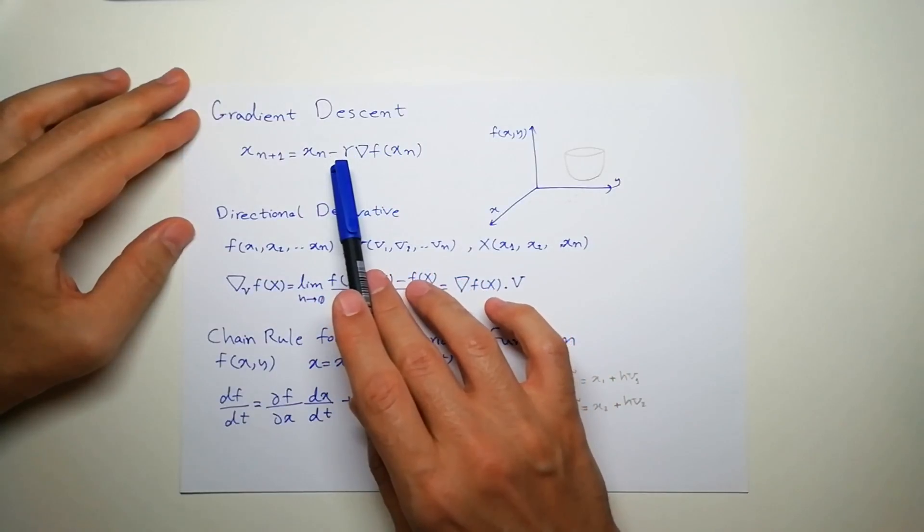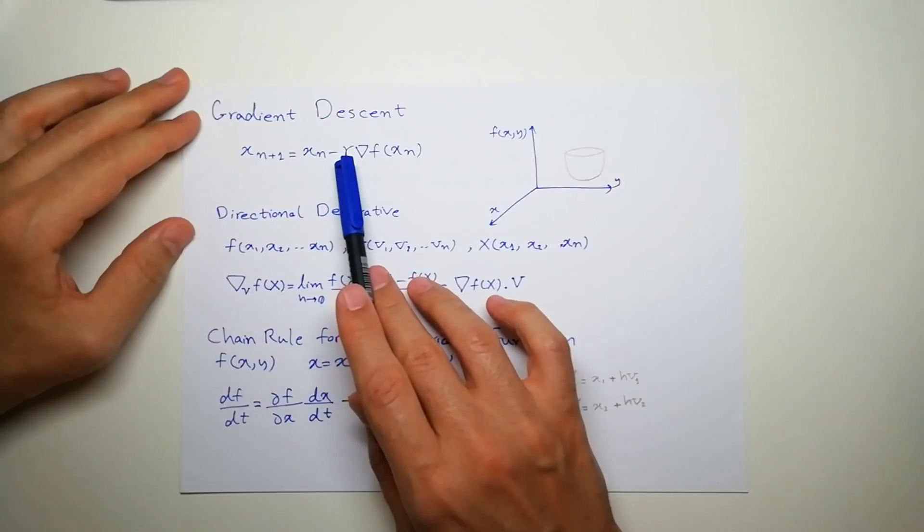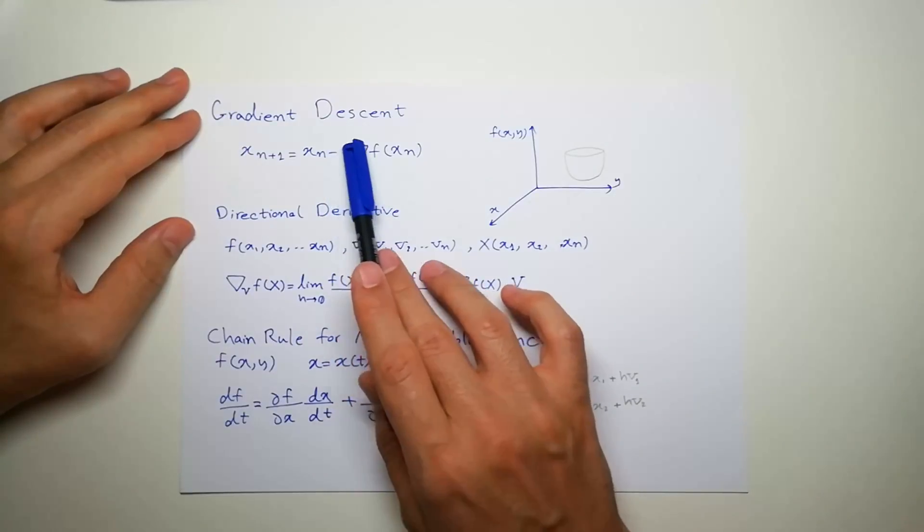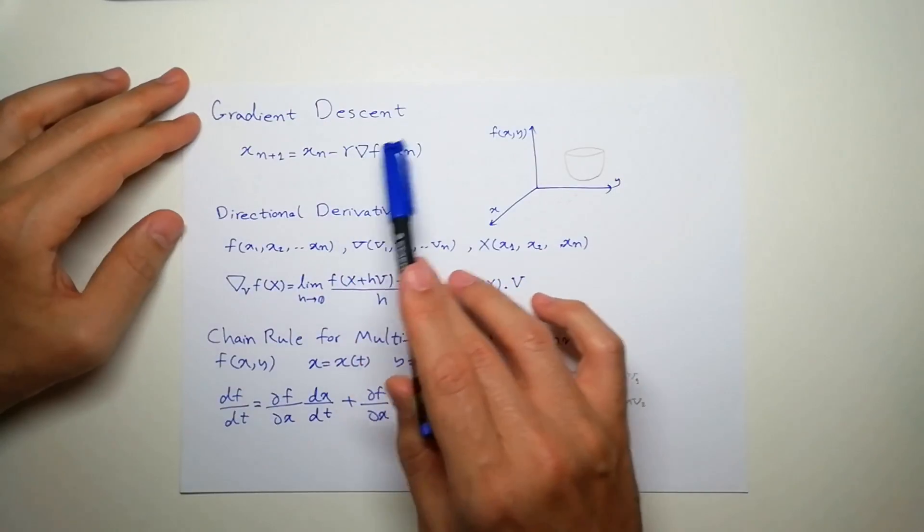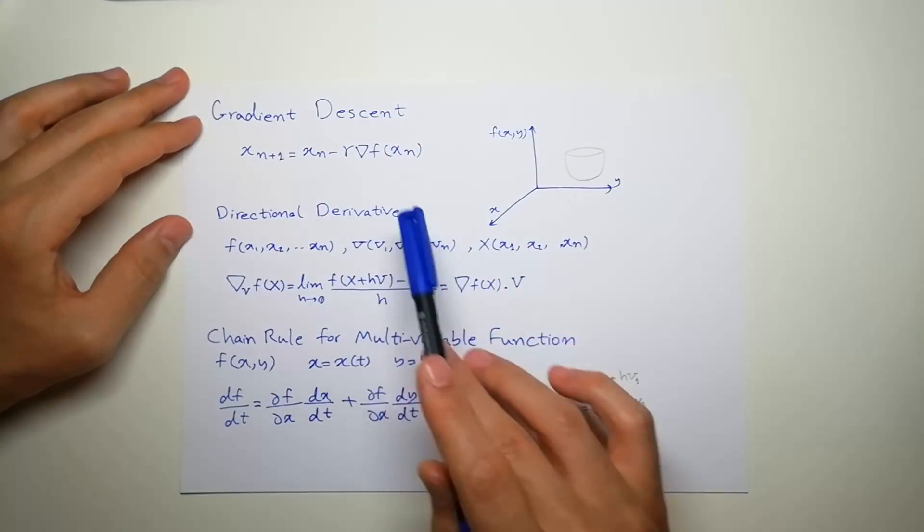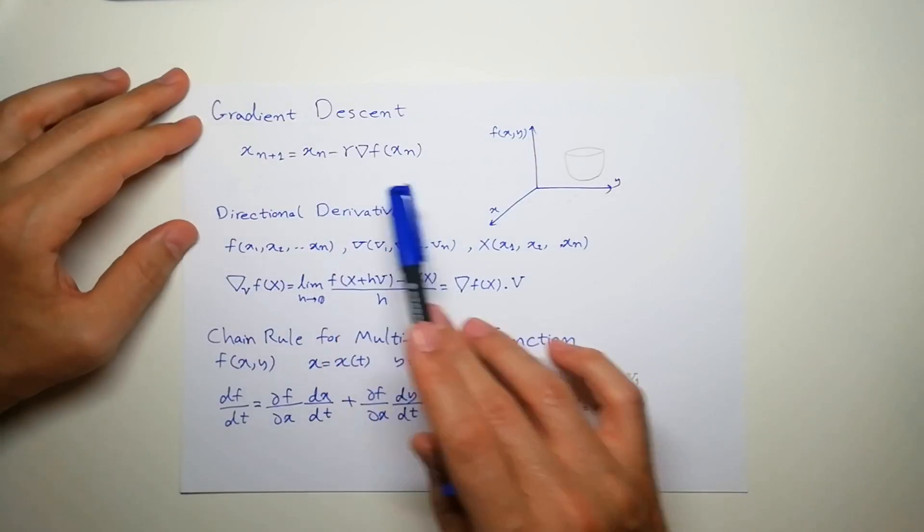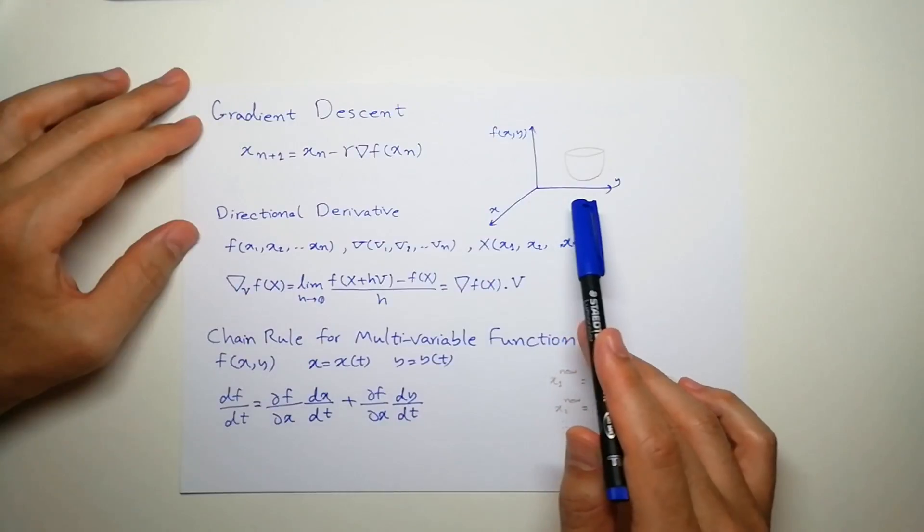If you want to find the local minimum, you have to subtract it. If you want to find the maximum, you have to add. Usually there's a term here, gamma or a multiplier, which I'll tell you in a minute what it is and how it actually finds the local minimum or maximum.